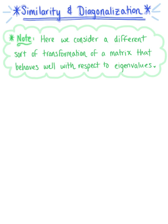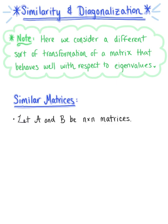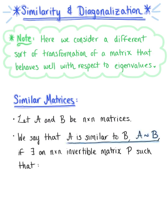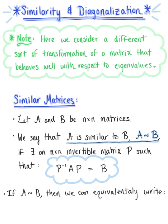To begin, let's consider the definition of similar matrices. We let A and B be n by n matrices, and we say that matrix A is similar to matrix B if there exists an n by n invertible matrix P such that the inverse of P times A times P equals B. If A is similar to B, we can equivalently write A equals P times B times the inverse of P, or that A times P equals P times B. We can use any one of these different notations depending on what we're looking for.